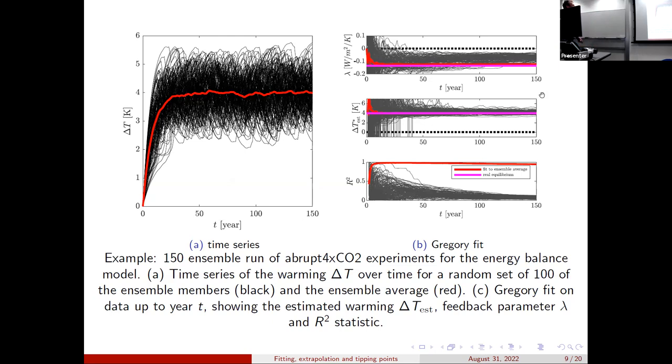So this is an example of an ensemble of runs for four times CO2 for this model. And in fact, this is in the case where we've sped up the albedo dynamics, so it's instantaneous albedo. So it's just a standard global energy balance model. And you can see the different trajectories are shown in black and they have some natural variability. If you do an ensemble average, you can then do fitting. This is a Gregory fit from a period zero up to some time T. And you can see the ensemble nicely converges to actually what is the true value which you can compute in this case. And what's more, the variance, the R squared is heading towards one indicating that you are explaining all of the variance in the signal by the model rather than by the variability.